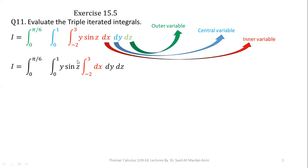Please note that in multivariable calculus, when you are performing integration with respect to one variable, the other variables behave like constants. So with respect to x, y and sin(z) are constants — you can take them outside of the innermost integral. We are then left with the limit from 0 to π/6, limit from 0 to 1, times y·sin(z), times the limit from −2 to 3 of dx.